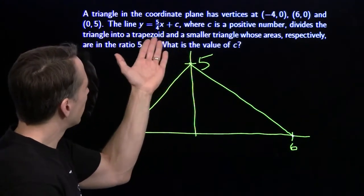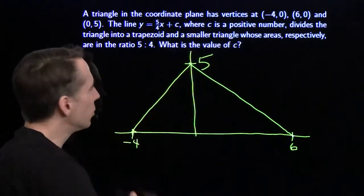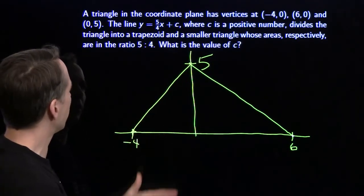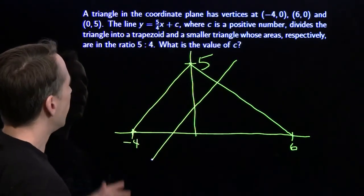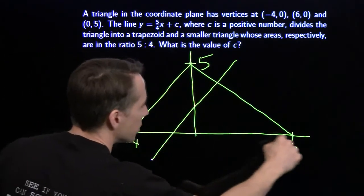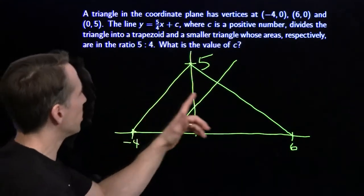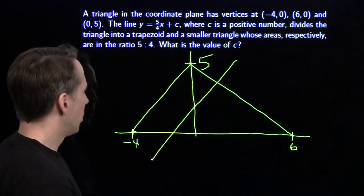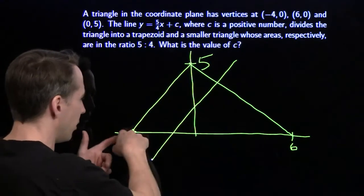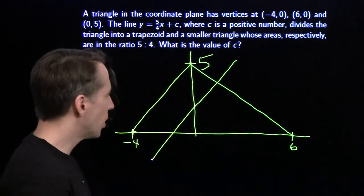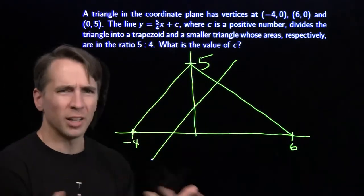Alright, I have a triangle. And I have a line, which is 5 fourths is the slope, goes up kind of like this. It divides this triangle into a trapezoid and a smaller triangle. So it's going to come through something like this. And it cuts it into the areas, the ratio of the area of this triangle to this trapezoid here is, so the trapezoid to the triangle is 5 to 4. Well, I know the area of the big triangle. I can find that area. The base is 10. The height is 5. That means the area is 25. So this little triangle here has to be 4 ninths the area of that.